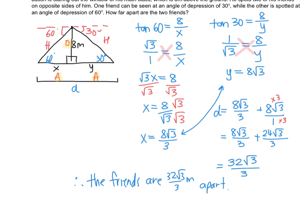Very similar to grade 10: read your scenario, draw a triangle, pick your ratio. The only difference is, instead of going to your calculator to figure out what the ratio is equal to, you're going to use your special triangles. Once you've swapped the trig expression with the ratio, then you can cross multiply to isolate for your variable. And that's it.